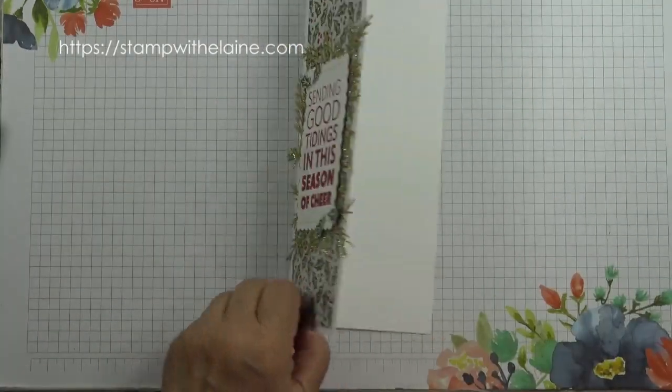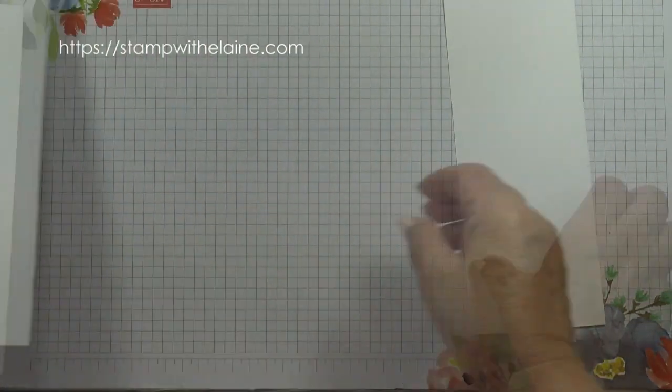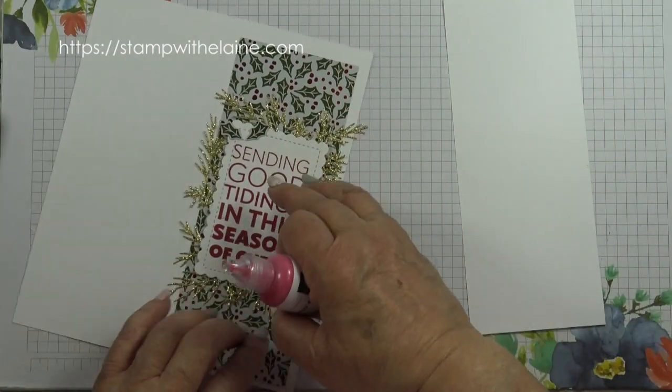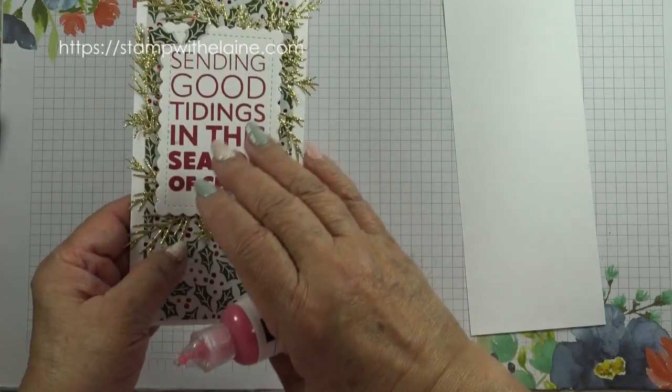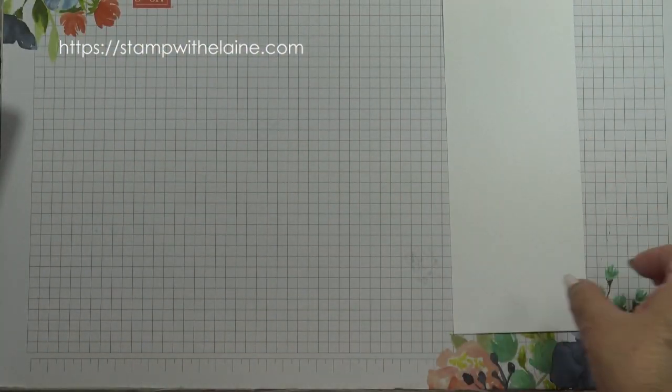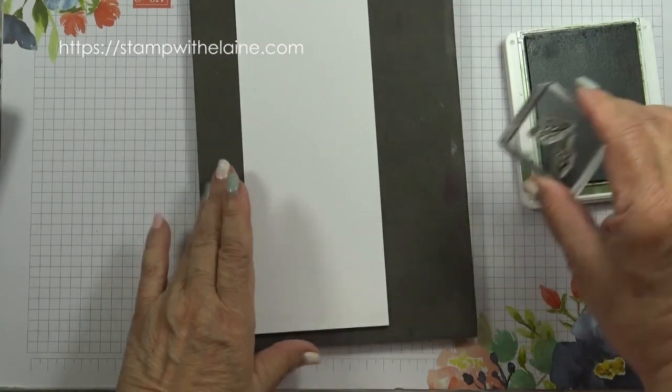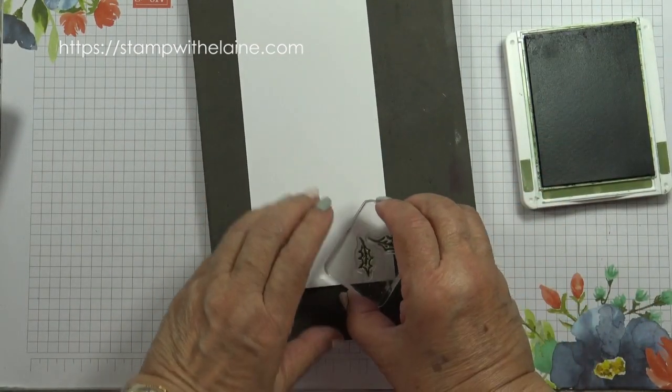Pop the holly leaves on the back of the glue dots and just pop them on here. Next thing we do is to do the inside, because when you put the pearlized berries you want to leave plenty of time for it to dry, otherwise it will smudge. I'm going to stamp the holly leaves first.